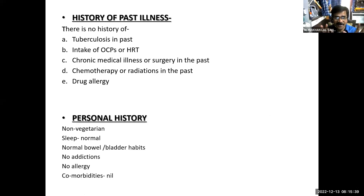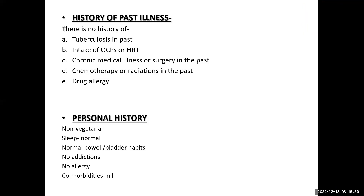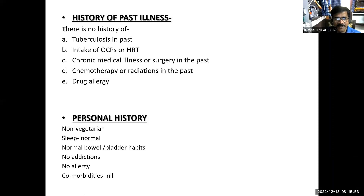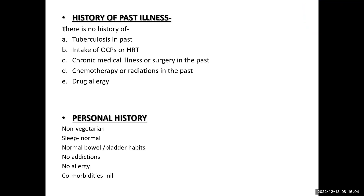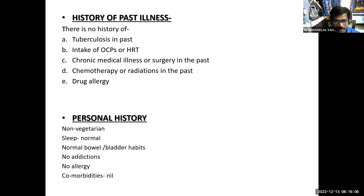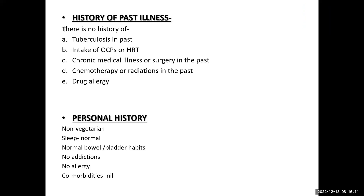Past history is a very important part. In one liner you can state the patient has no major medical history and no history of any surgery in the past. These are the two important points. Mention specifically about tuberculosis, or any history of OCP intake or HRT. In personal history, all points were mentioned, but mental status should also be mentioned.